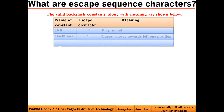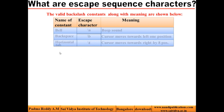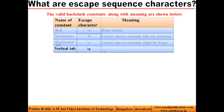The next constant is horizontal tab. It is denoted by \T. When this is printed using printf function, the cursor moves towards right by eight positions. Look at the next constant: vertical tab. It is denoted by \V. Normally we are not using it and it is not supported.